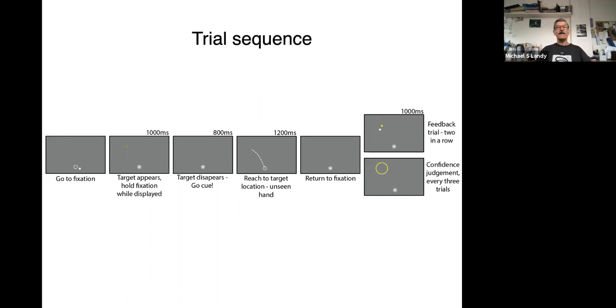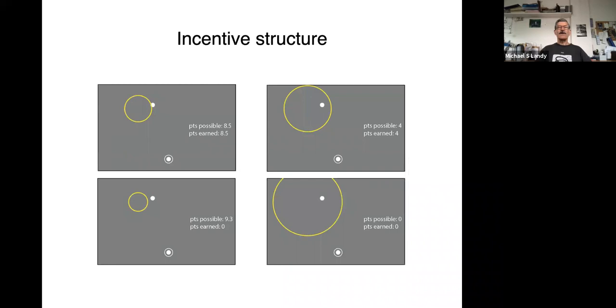We'll project a target. You then reach towards the target. You don't get to see your reach. You may feel it proprioceptively, but you can't see it. You then return to where you start, and then a circle shows up centered on where the target was. And you make your confidence judgment by varying its size so as to just barely include where you think your reach ended up. We incentivize the size of that circle by giving you points for where you set it. So if you make it so small it doesn't include your endpoint, you get no points. If it includes your endpoint, you'll get points, but the bigger you make it, the fewer points you will earn, and points will turn into money. So you're incentivized to make the circle as small as possible such that it includes where you ended up.